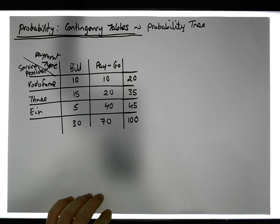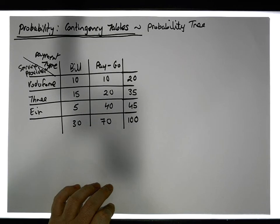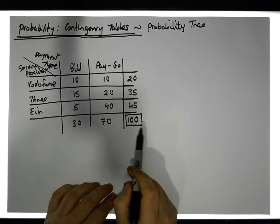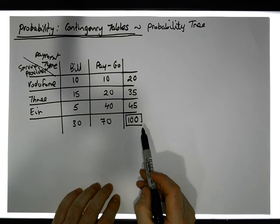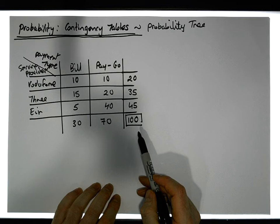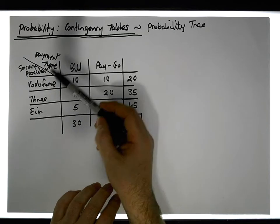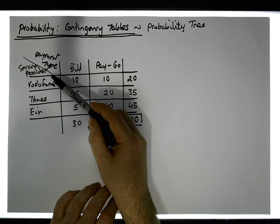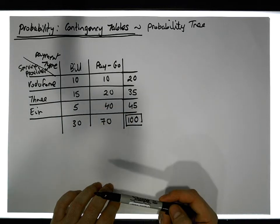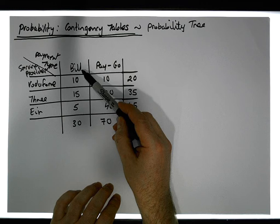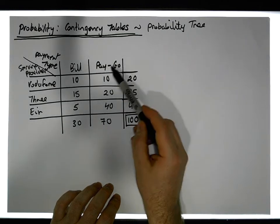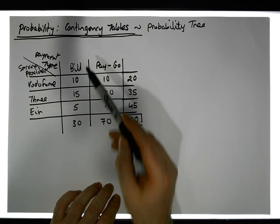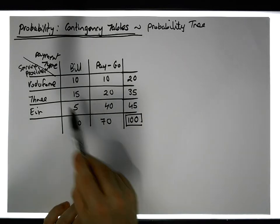We're going to look at the previous example where we asked 100 students two questions. The first question was what mobile phone service provider were they with — and keeping in mind we're in Ireland, so the options are Vodafone, Three, and Eir. The second question was whether they are a bill pay customer or on pay as you go, where they pay their own credit until it runs out and then top up, versus a monthly bill.